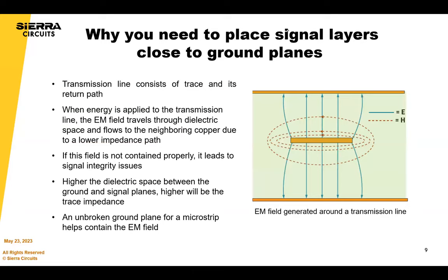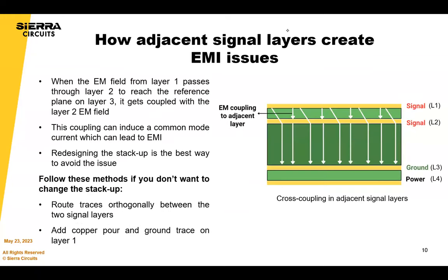A transmission line consists of a trace and its return path. The image shows a stripline configuration with ground layers on top and bottom. When energy is applied, the EM field travels through the dielectric space and flows to neighboring copper if there's a low impedance path. If this field is not regulated, it leads to signal integrity issues. Have less dielectric spacing between ground and signal planes to reduce impedance. When adjacent signal layers are present, the EM field from layer one passing through layer two couples with layer two's EM field, inducing a common mode current that leads to EMI. Redesigning the stack-up is the best solution; otherwise, route traces orthogonally between the two layers and add copper pour and ground traces on layer one to reduce severity.